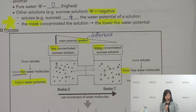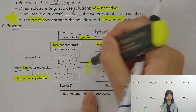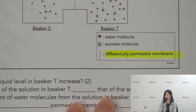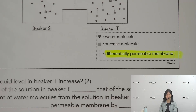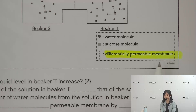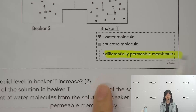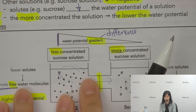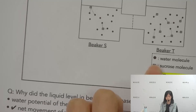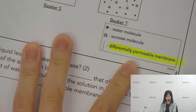When we have a water potential gradient between two places, you can see in this diagram there is a differentially permeable membrane in the middle — have you learned about that? A differentially permeable membrane is a membrane that only allows certain substances to pass through, such as water.